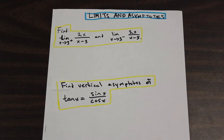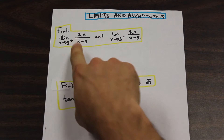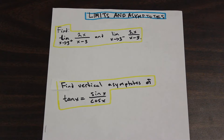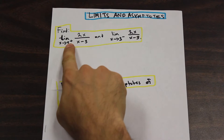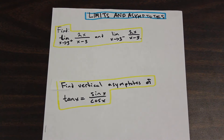So let's look at the first question. The first part asks us to find the limit as x approaches 3 from the right side of 2x over x minus 3, and the limit as x approaches 3 from the left of 2x over x minus 3. This question isn't asking us to determine whether or not the limit exists. If we plug in 3, we get an undefined value — we get infinity, we're dividing by 0. But the question asks us to find the limit, even if it is infinity.